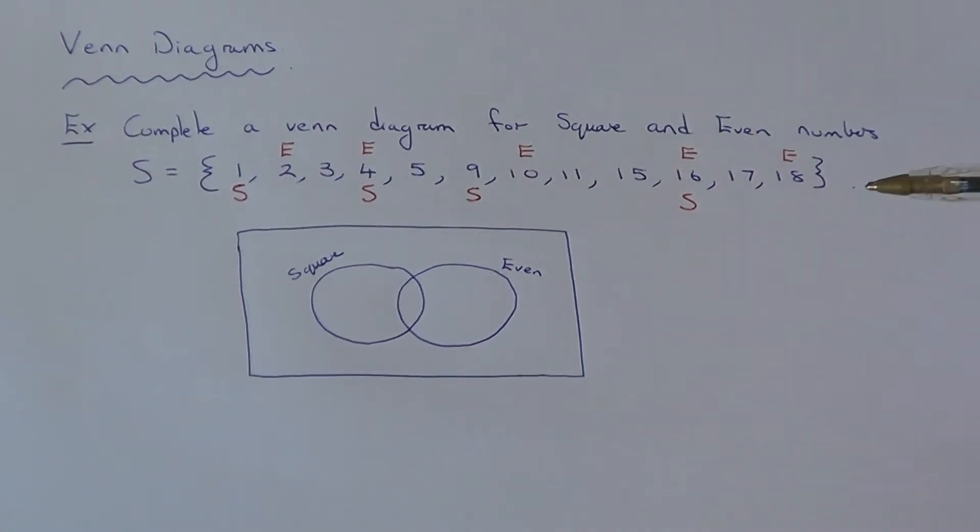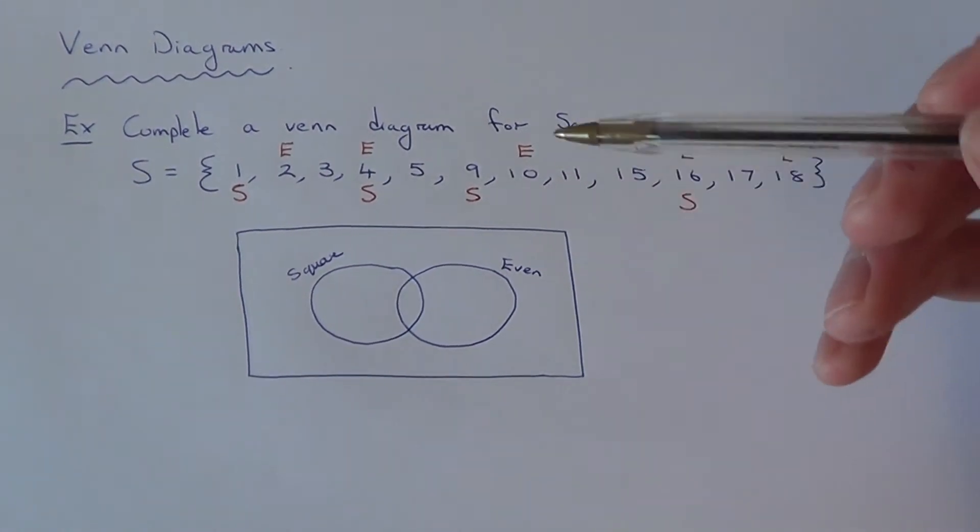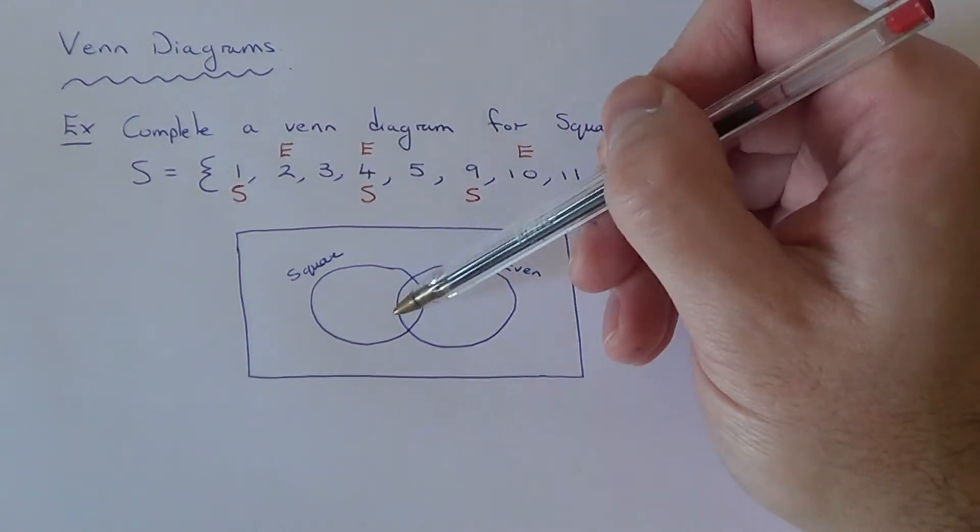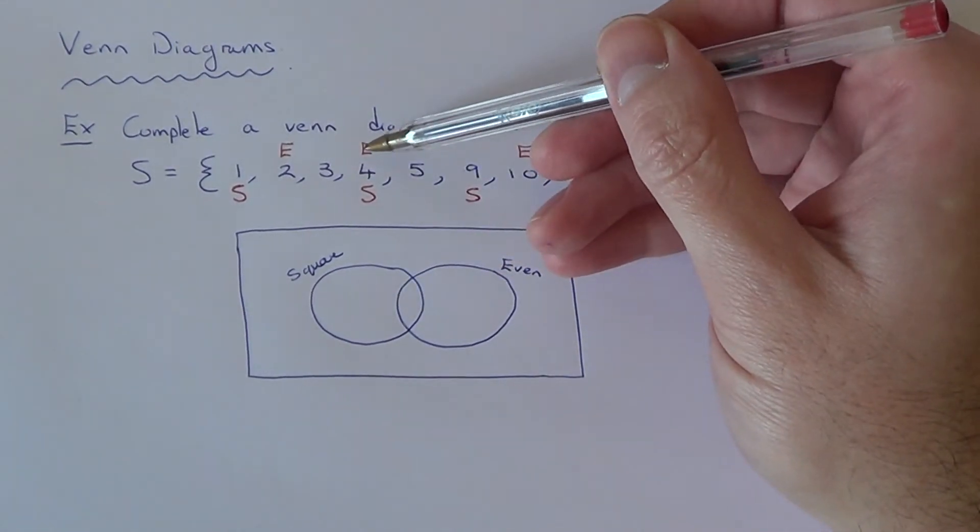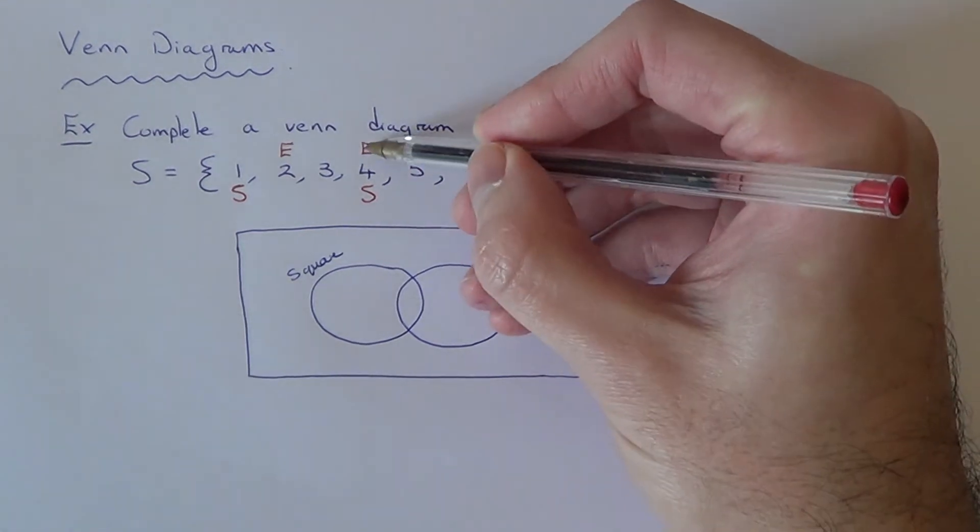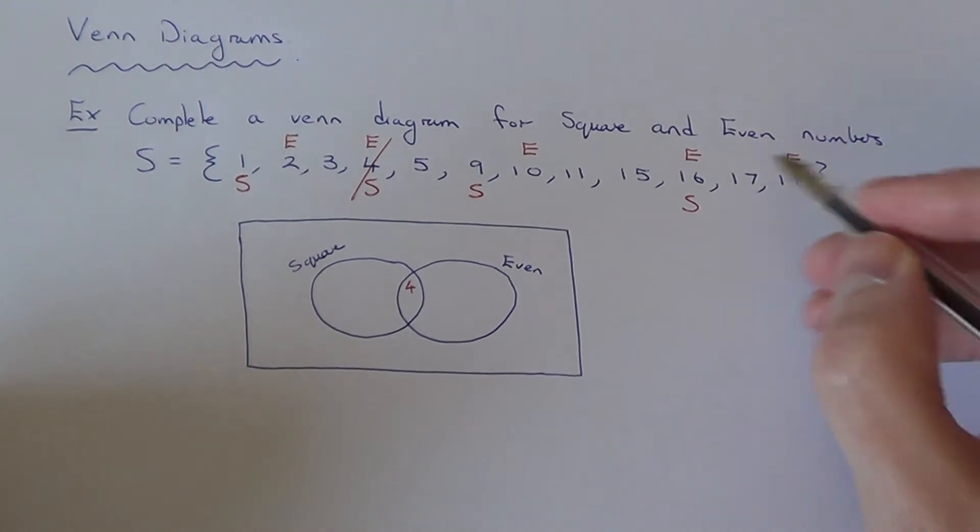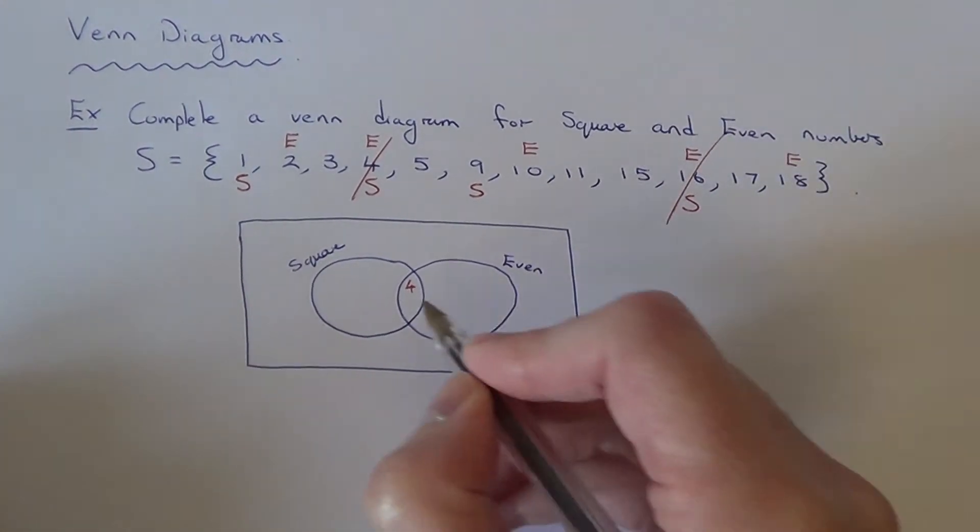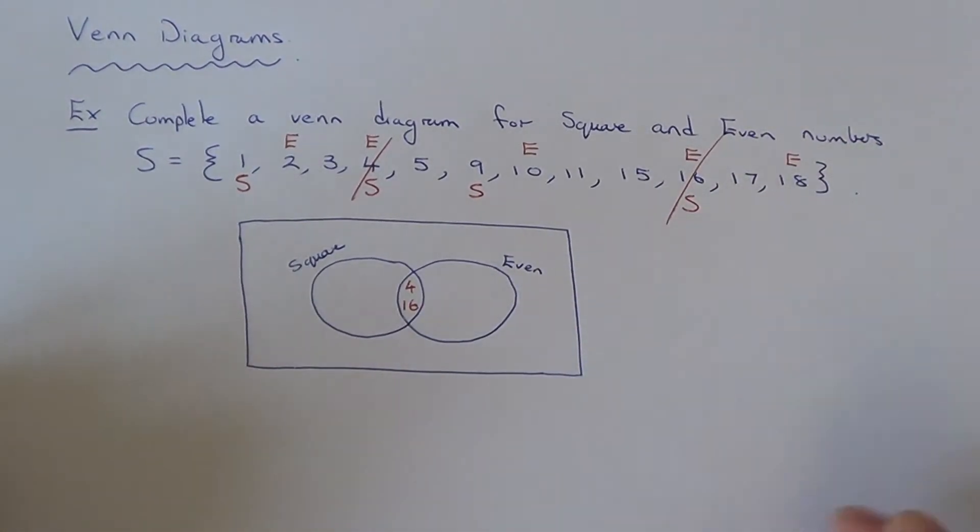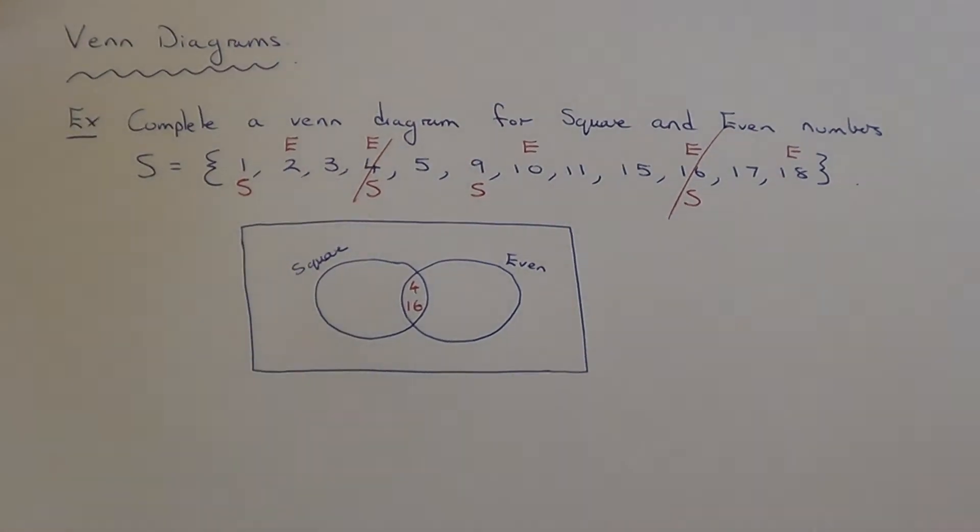So you usually start with the centre of the Venn diagram. So the centre of the Venn diagram is for the numbers which are even and square. So this will be the number 4, you can cross this one out, 16 is even and square. So we have 2 numbers in the centre of the Venn diagram.